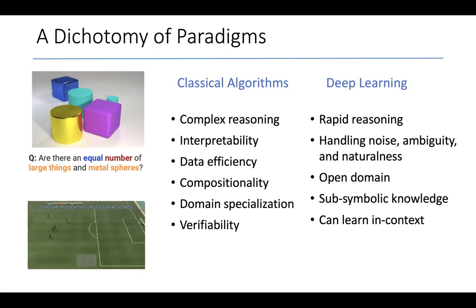On the other hand, deep learning is great at rapid reasoning. It is also good at handling noise, ambiguity, and naturalness.